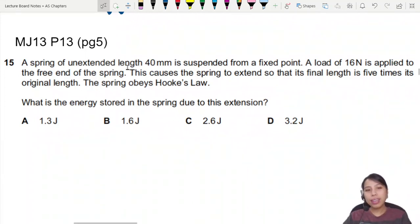We have here a spring of unextended length 40 millimeters. Unextended, you can call it the original length. I like to use the symbol L0, N-A-U-G-H-T, that's it 0, L0.